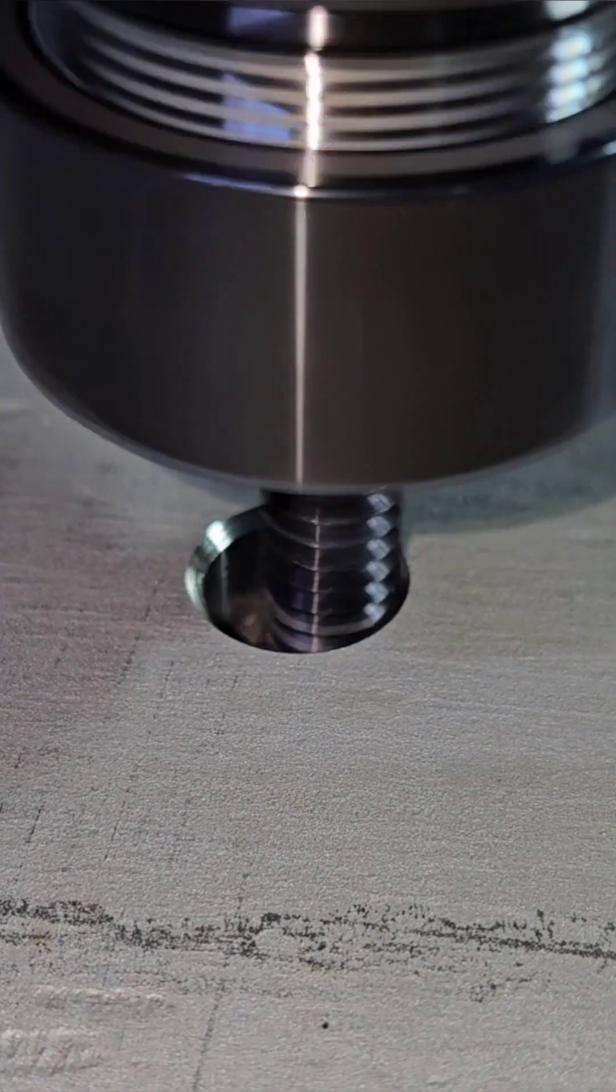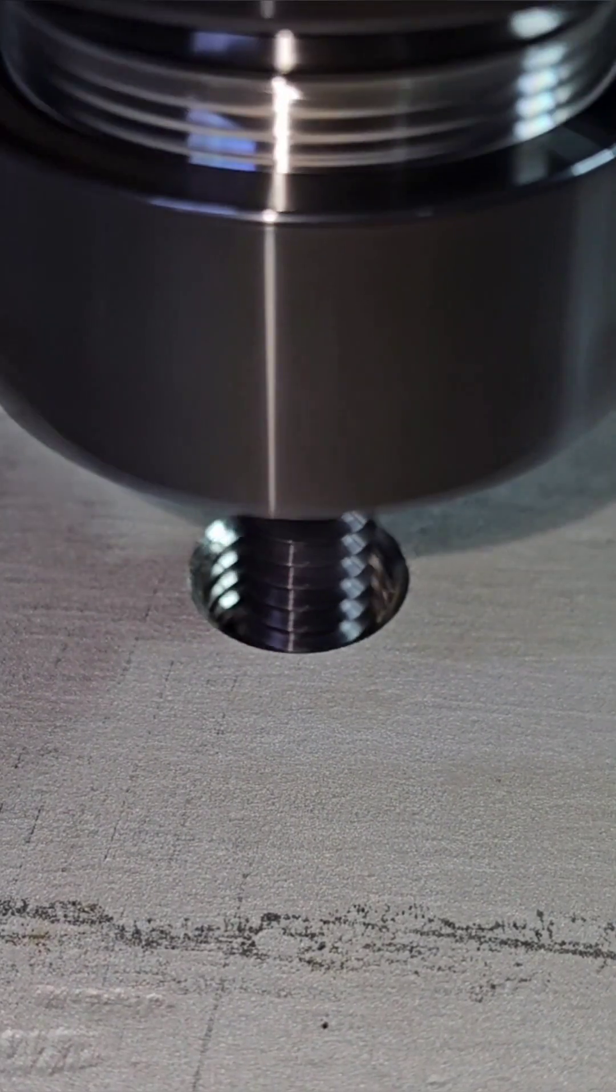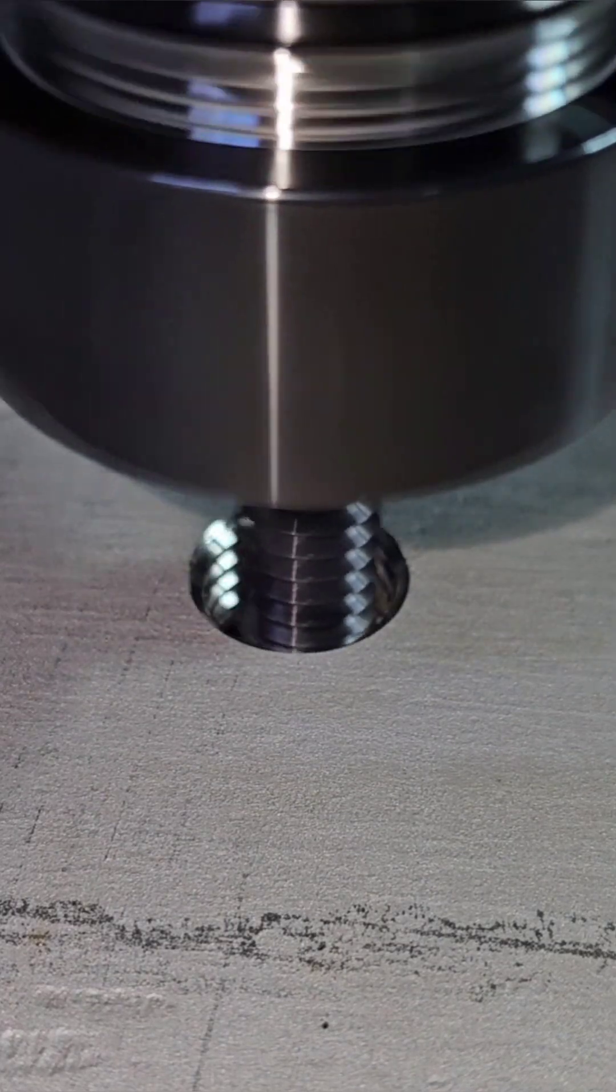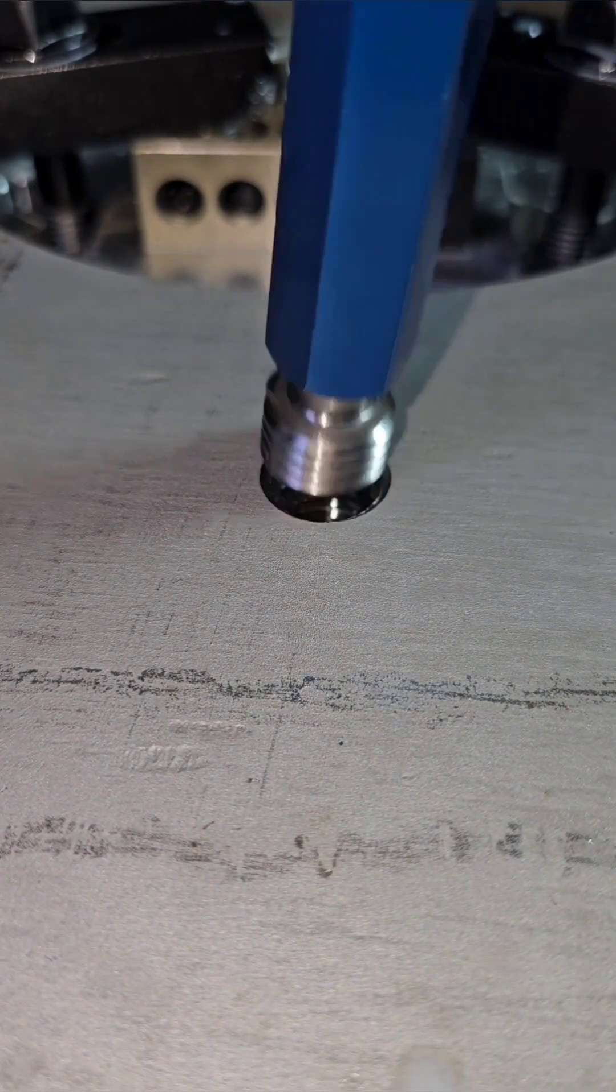We're dropping to the bottom of the hole and we're climb milling out in one pass. As you can see here this pitch specific thread mill can create the entire profile in just one revolution.